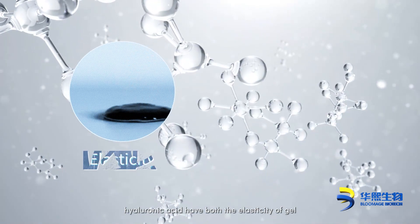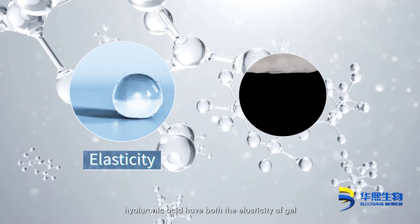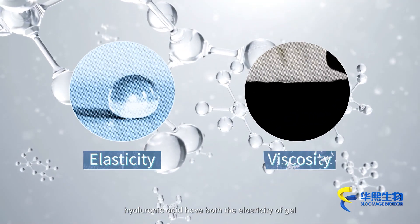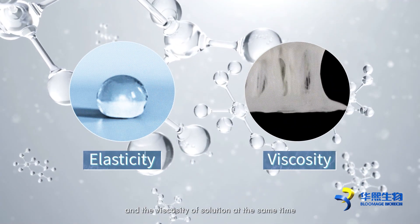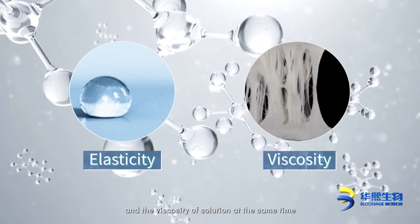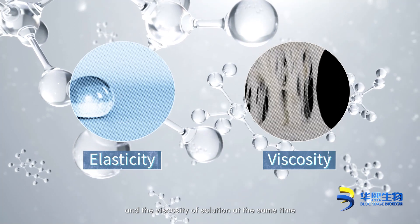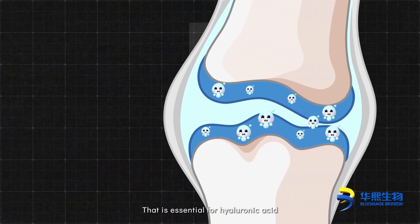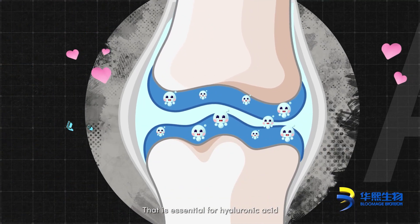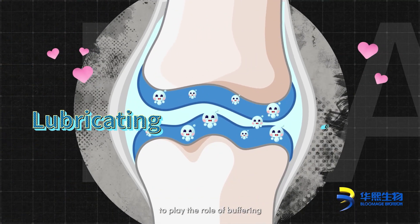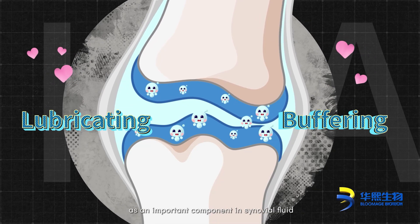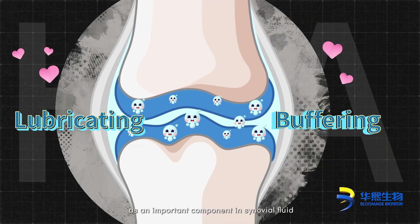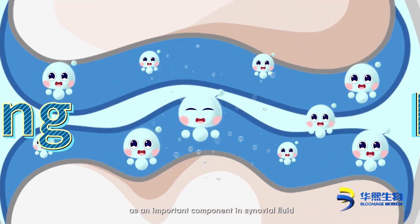Viscoelasticity: Hyaluronic acid has both the elasticity of gel and the viscosity of solution at the same time. That is essential for Hyaluronic acid to play the role of buffering as an important component of synovial fluid.